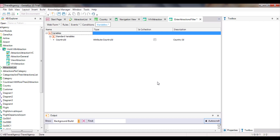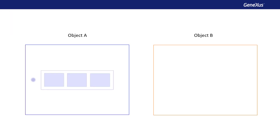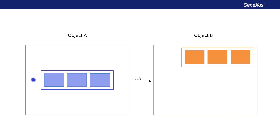So, if two objects have a CountryId variable, even if they have the same name, they will be two different variables. So, how do we make an object A call another object B at any given moment, sending it values? Also, this object B should be able to load in its internal variables the value sent to it, in order to do something with that information. For an object to be able to receive values, which we call parameters, we must open its Rules section, and write a PARM rule.